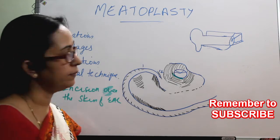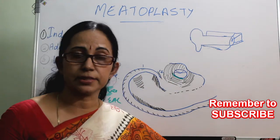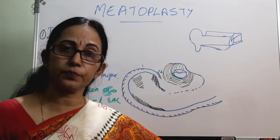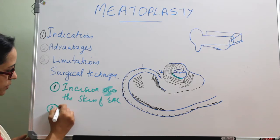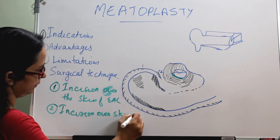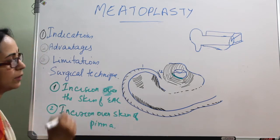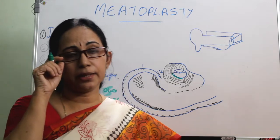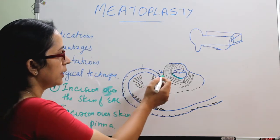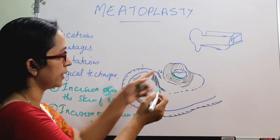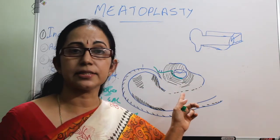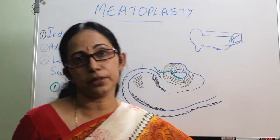Step two: along with this, we make a vertical incision at the intercartilaginous incision to the pinna — that is, mobilizing the pinna. So step two is a vertical incision over the skin of the pinna so that the pinna can be mobilized. This is the Hirman type B incision and it is done in all cases of meatoplasty.